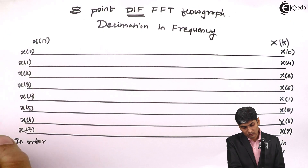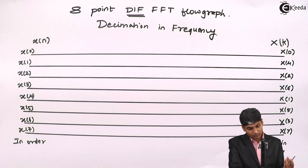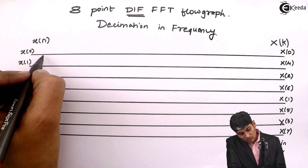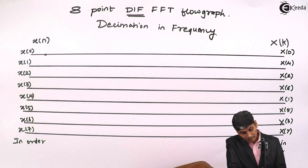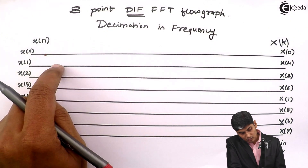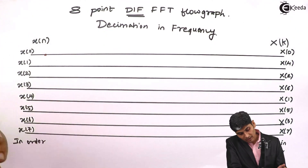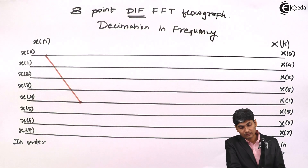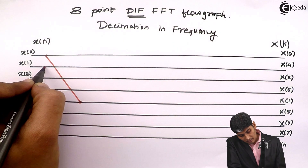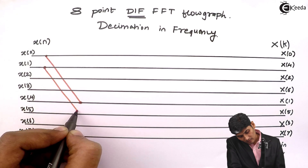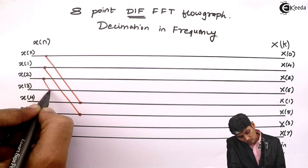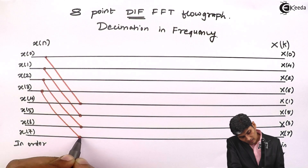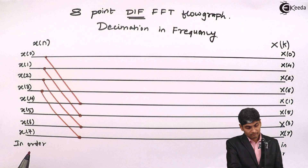So how does the flow graph look? The first stage in the flow graph, starting from the X of n side, will have bigger crisscrosses. The first line will meet the fifth line — that is the first crisscross. The second line will meet the sixth line, and so on. Each line meets in a bigger crisscross.